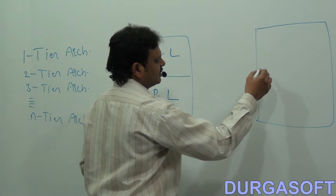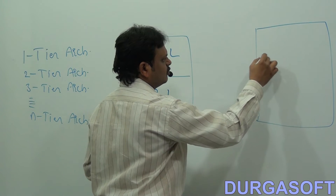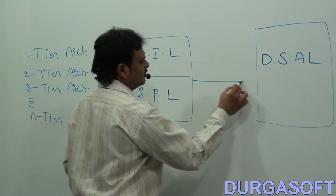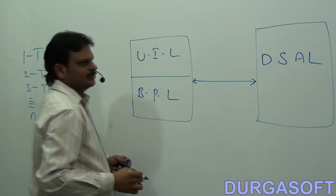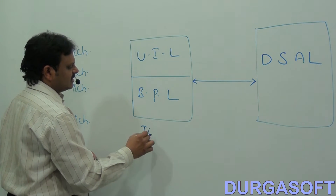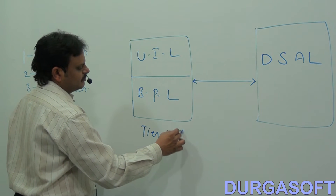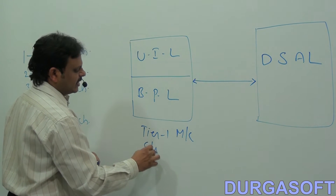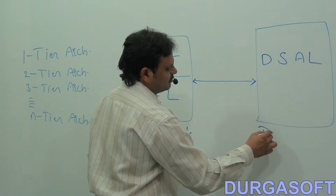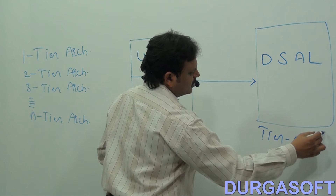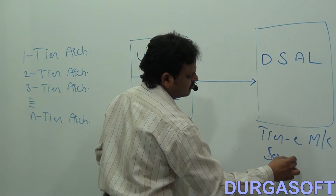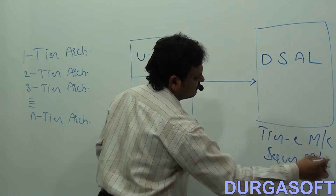In the second machine — the second tier — we are able to provide the data storage and access layer. In between these two, we are able to have some communication. That means tier one is the client machine, and tier two is the server machine.